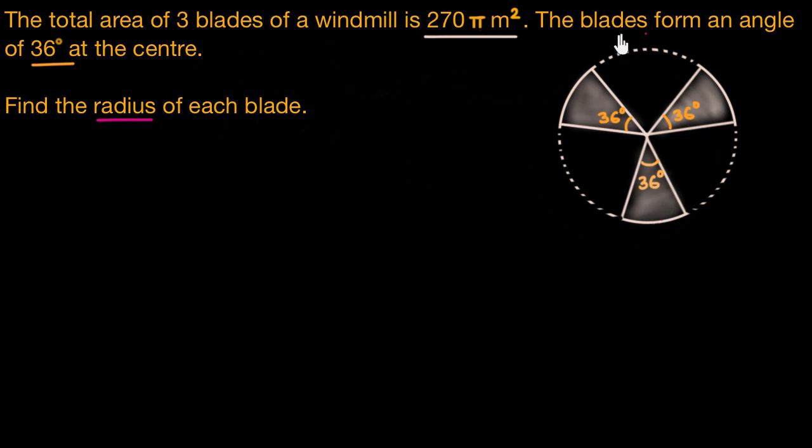We have the blades of our windmill here. Although I haven't quite drawn out the tower of this windmill, you get the idea. Let's figure out the radius of each of these blades.